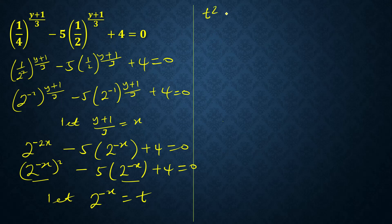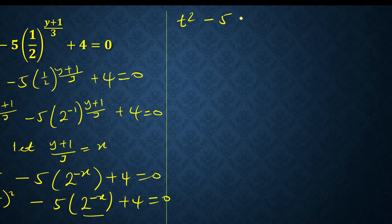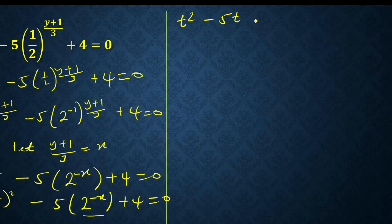So I have t squared minus 5t plus 4 equals zero. This one is a quadratic equation, so you can use any of the methods.